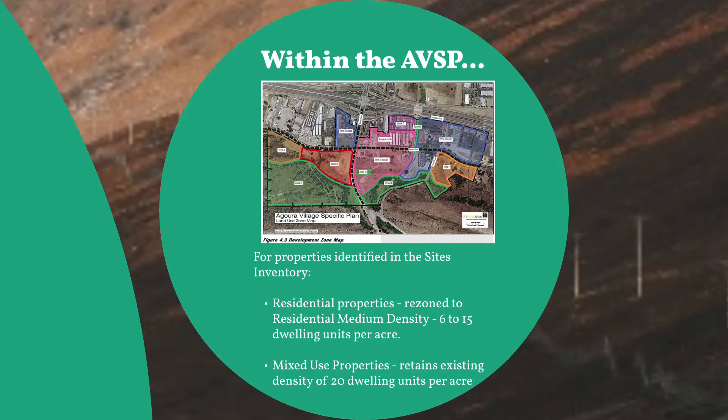To ensure adequate capacity for the development of units to meet our RHNA allocation, staff is recommending rezoning the properties within the Agoura Village Specific Plan Area, or AVSP, that are currently zoned for residential uses to residential medium density. The base zoning would allow property to develop at a density of 6 to 15 dwelling units per acre.